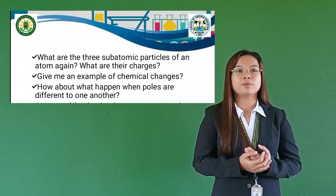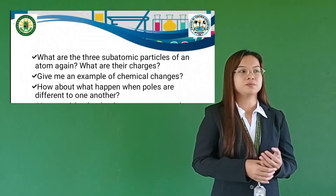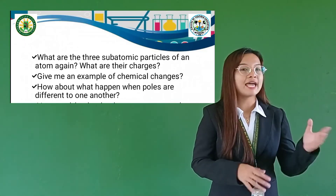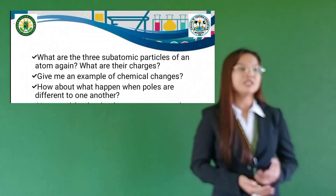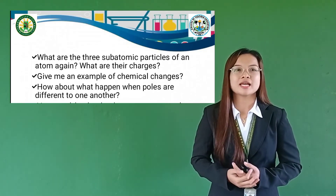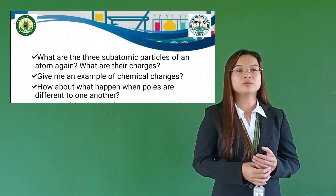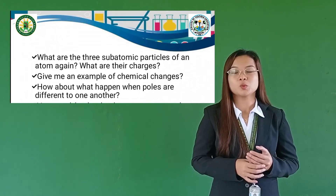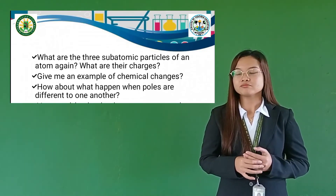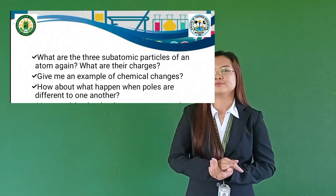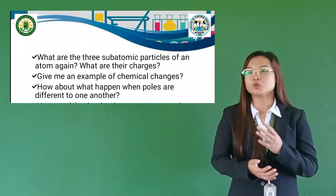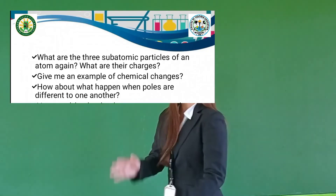Give me an example of chemical change. Correct — liquid to gas. How about what happens when poles are different from one another? Awesome — they will attract each other. For the values integration, always remember that we should make our family life solid, with particles that are compacted and near to each other.